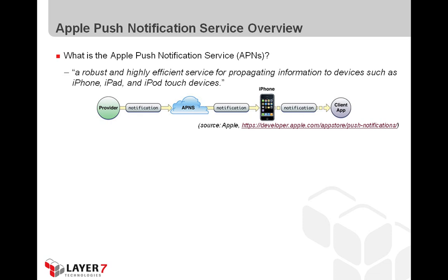The way Apple has architected the service, notifications originating from the server side get sent first to the Apple Push Notification Service via a secure connection, and then the APNS pushes that notification to the target device. A notification package consists of two main pieces of data: first, the device token, which is essentially a unique identifier identifying that iOS device; and two, the payload, which is the notification message that specifies how the user will be alerted.